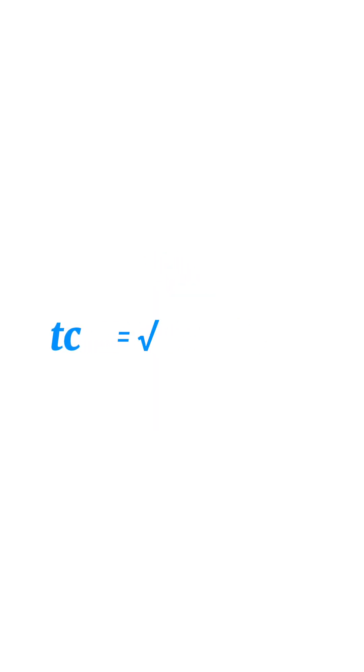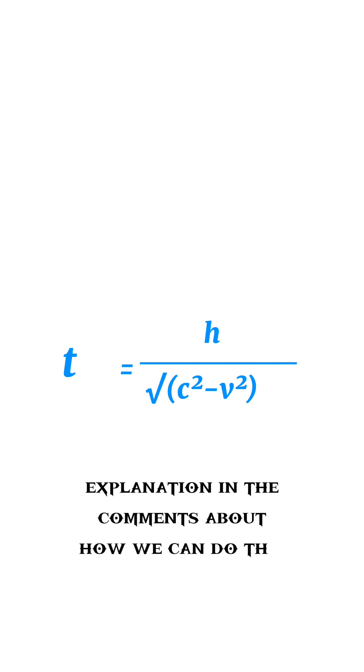Because light speed is same at every part of the universe, we can write this equation. Or flip the C from left side to right side. And now we can flip the whole equation to this. T equals to h divided by root over C squared minus V squared.